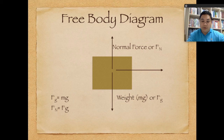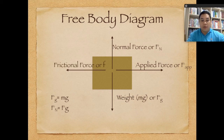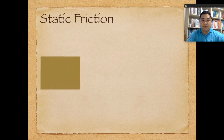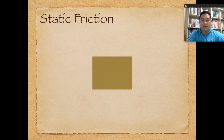If we apply a horizontal force to the box, we now have what is called the frictional force, represented as small letter F. Since the object is not moving left or right, the frictional force is equal to the applied force.